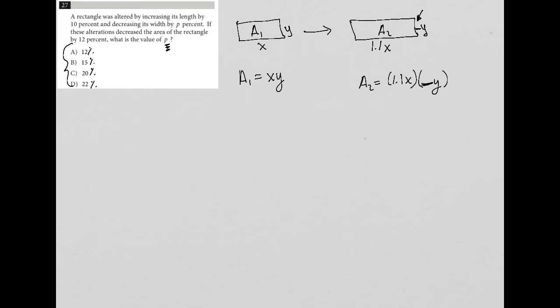So if these alterations decrease the area of the rectangle by 12%, what does that mean? That means that A2 is actually equal to 12% less than A1. So it's like A1 minus 0.12, or 12% of A1, which in simpler form is just 0.88, 88% of A1. So A2 is equal to 88% of A1, or 0.88 A1.